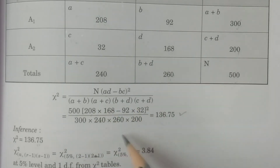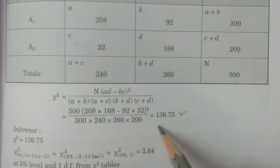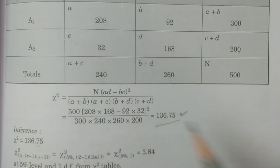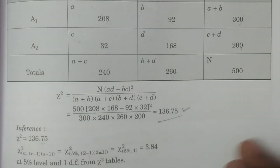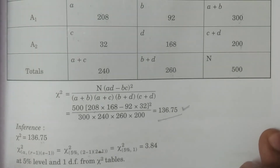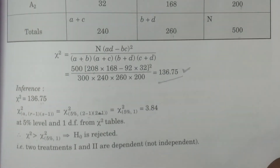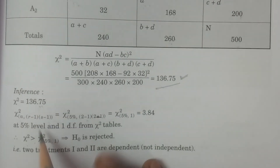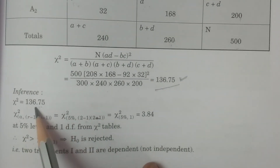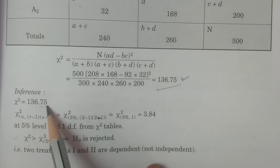After substituting and calculating all values, the chi-square calculated value comes out to 136.75.